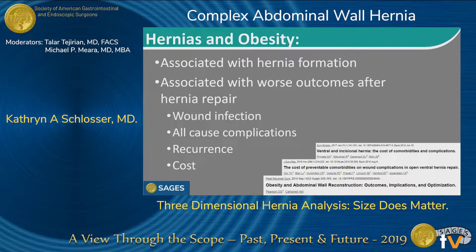The impact of obesity on hernias is well established. Obese patients are more likely to develop hernia after abdominal surgery. They also have worse outcomes after hernia repair, including higher rates of wound infection and recurrence. These adverse outcomes are theorized to be multifactorial, including an association of intra-abdominal pressure with hernia recurrence and abdominal wall thickness with postoperative wound infection.